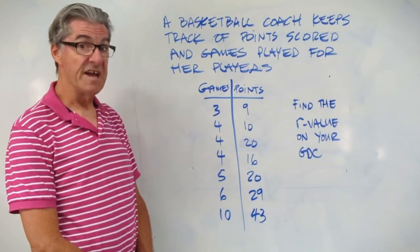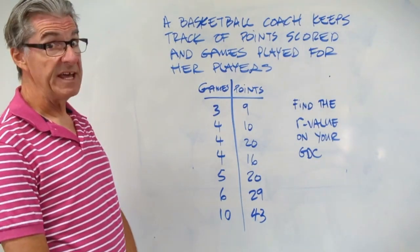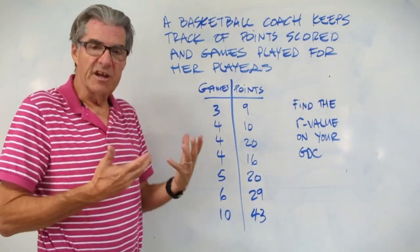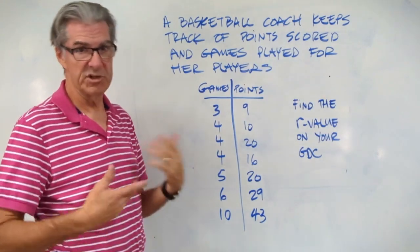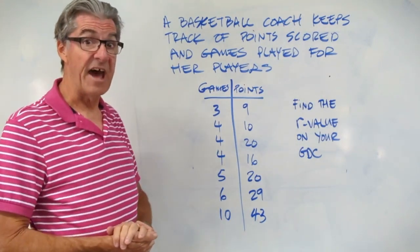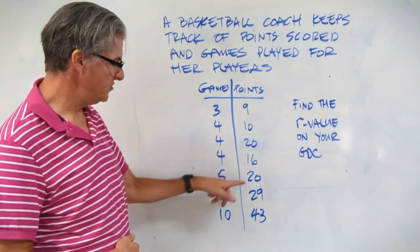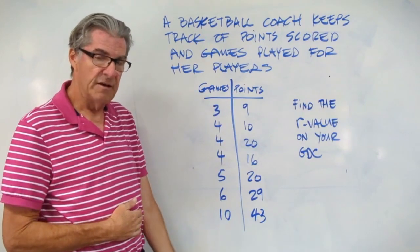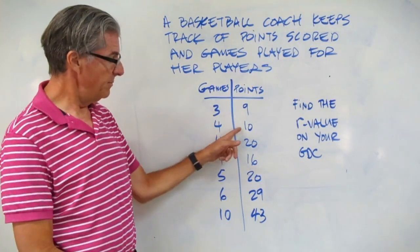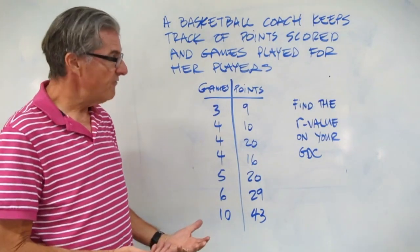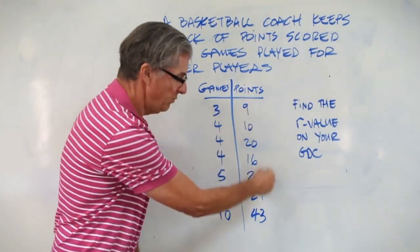Here's a scenario and we're going to find our first R value. A basketball coach keeps track of points scored and games played for her players. She's trying to see if there's a correlation between how many games somebody plays and how many points they score. We could guess there's going to be a correlation — the more time you're out on the court, the more points you're going to get to score — but let's calculate that. Here's her data: 3 games played, 9 points scored; 4 games, 10 points; 4 games, 20 points; 4 games, 16 points; 5 games, 20 points; and so on. The data definitely shows a trend but it's not perfect — it's choppy. We have three people that played four games each, but their scores range from 10 to 20. So we'd like to know the R value of this data set. This is bivariate data — we have two variables: games played and points scored.